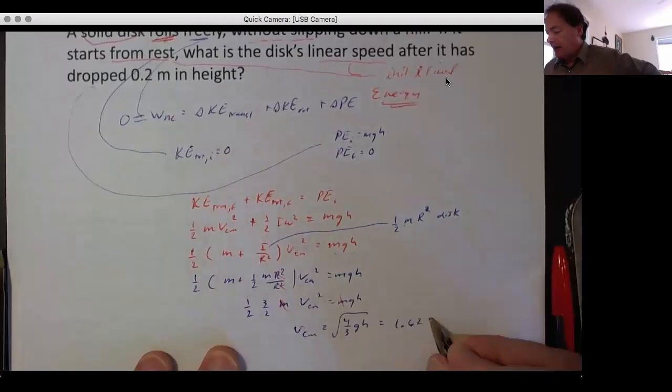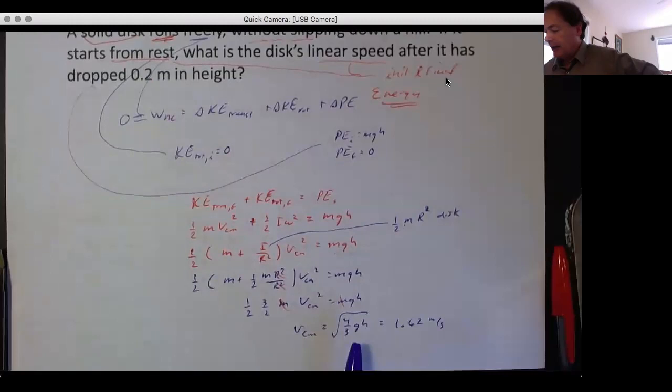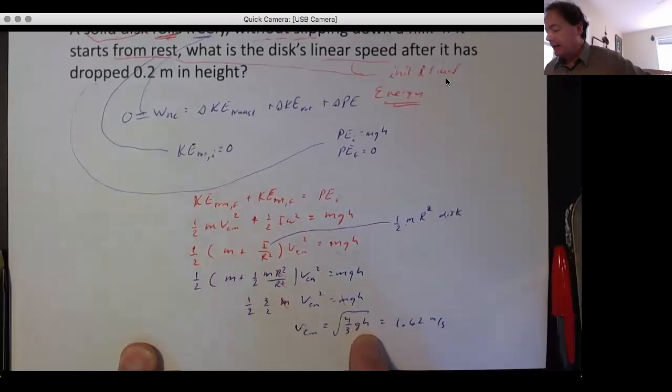Now if you remember what happens if it slid down, then this part wouldn't be here, so we wouldn't have gotten the three halves—we'd just get two, and that's square root of 2gh. And that's a comparison. This is less than that because we're putting some of the energy into rotation, not just kinetic.